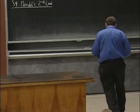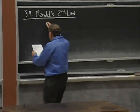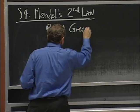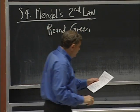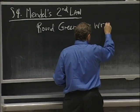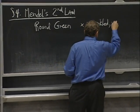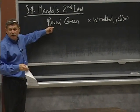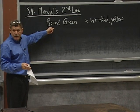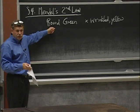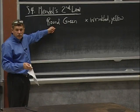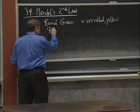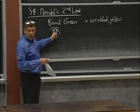He had a pure breeding line that was both round and green — that was the stuff he could pick up on the market. But he made a line that was both wrinkled and yellow. What is the genotype of this round green strain? At the round gene, what is its genotype? Big R, big R. It's a pure breeding strain — homozygous for the big R allele.